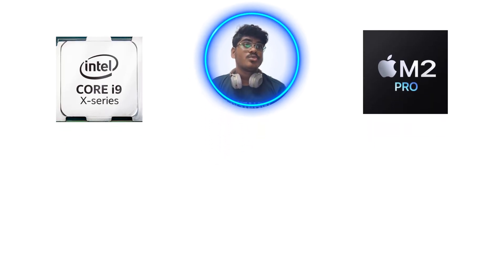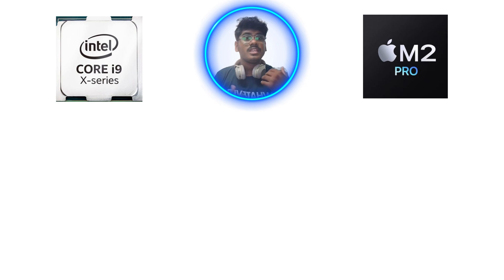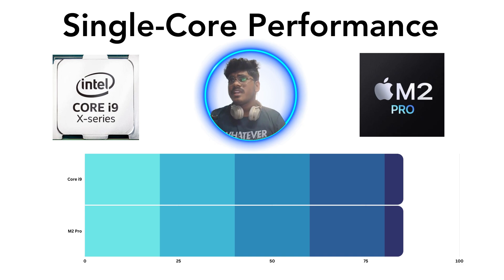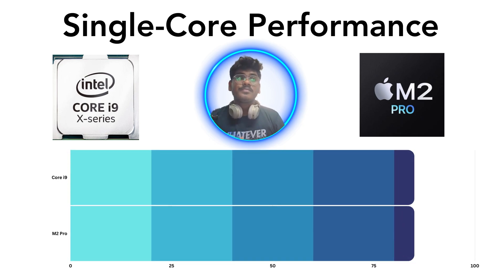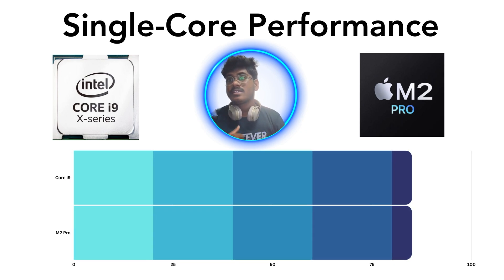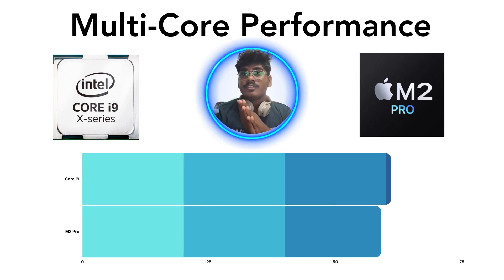Let's start with the general overview covering single-core, multi-core, power efficiency, a general review, and final scores. In the single-core performance level, both processors have the same score: Intel Core i9 scores 85 out of 100, and Apple M2 Pro also scores 85 out of 100. So they are tied at the single-core level.